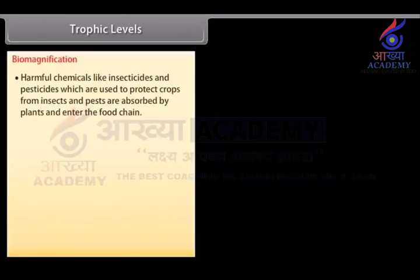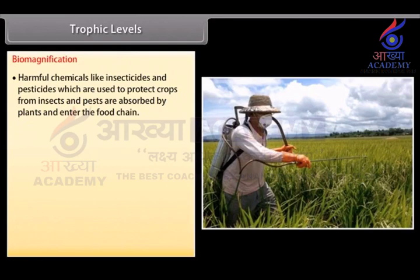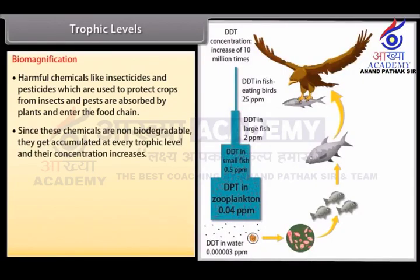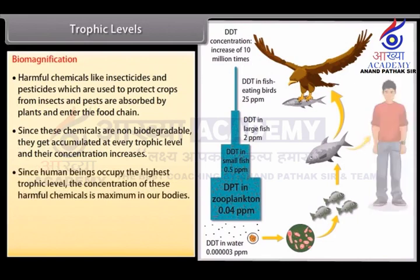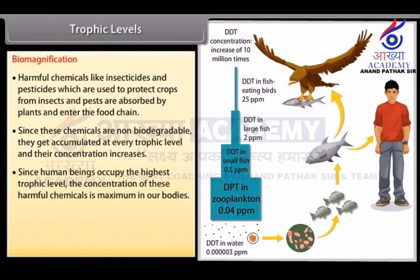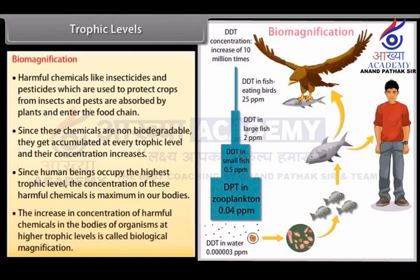Biomagnification: Harmful chemicals like insecticides and pesticides, which are used to protect crops from insects and pests, are absorbed by plants and enter the food chain. Since these chemicals are non-biodegradable, they get accumulated at every trophic level and their concentration increases. Since human beings occupy the highest trophic level, the concentration of these harmful chemicals is maximum in our bodies. This increase in concentration of harmful chemicals in organisms at higher trophic levels is called biological magnification.